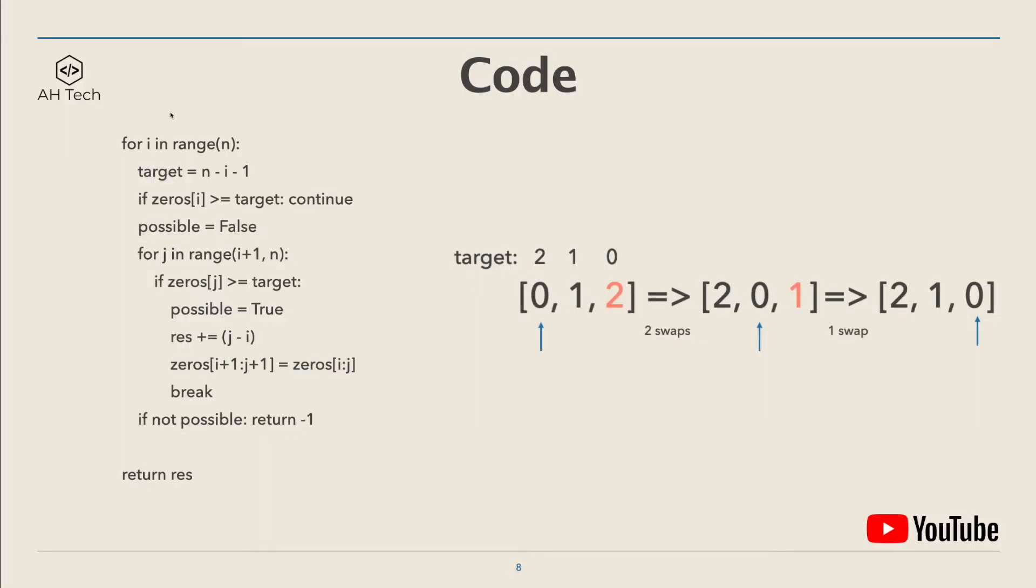First, we will have a for loop to go through every item in the array. At every index, the target number we need is n minus i minus 1. So for index 0, the target is n, which is 3, minus 0 minus 1, so it's 2 in this case. If the element at the index is already bigger or equal to target, then we can just continue the for loop. Here we will have a possible flag to check if it is possible to get a number for every index.